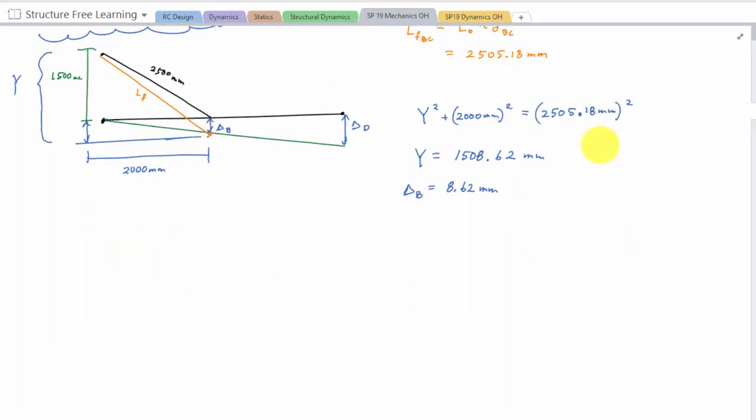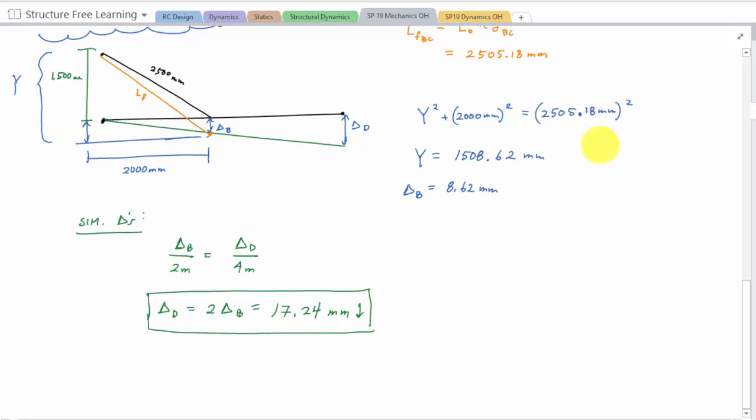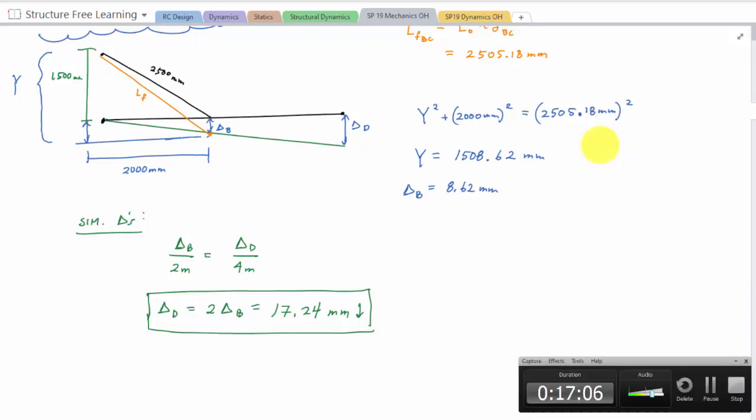And then by similar triangles, I would get that delta B over 2 meters is equal to delta D over 4 meters. And delta D would be 2 times delta B, which would be 17.24 millimeters downwards. And that is it. All right, Structure-Free.